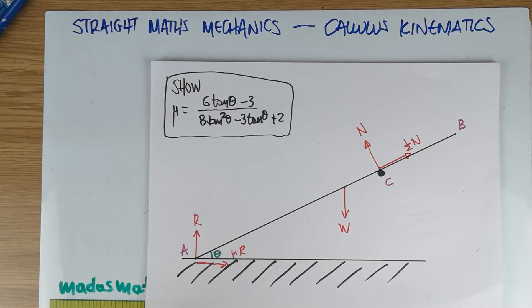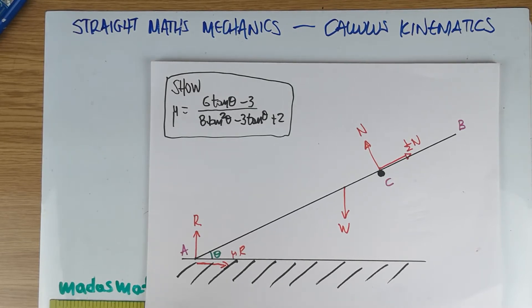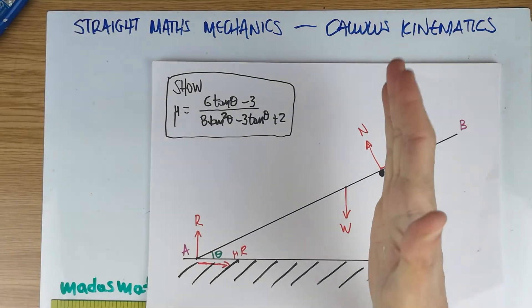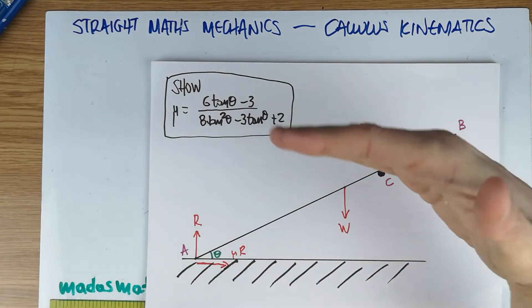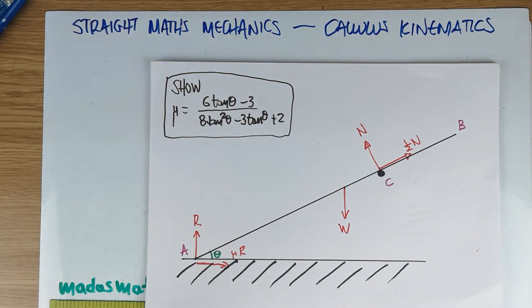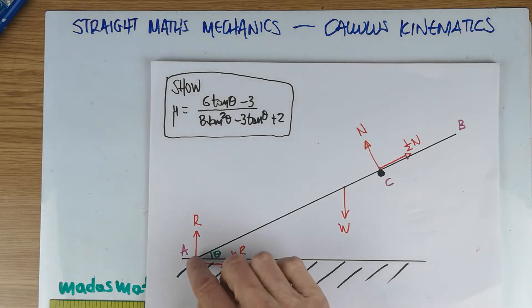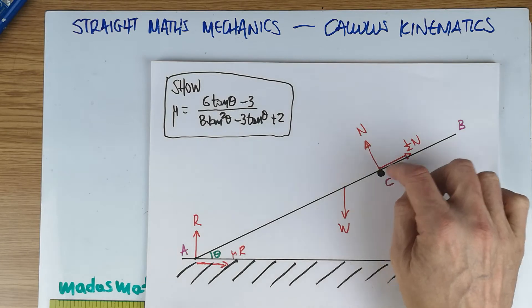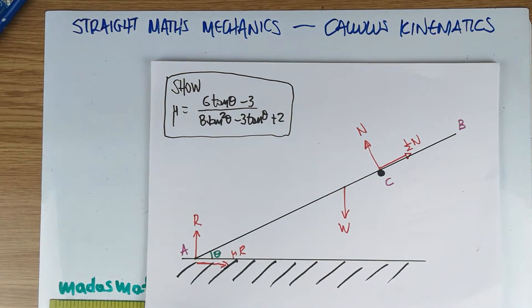This kind of question usually has three equations. Resolving vertically, resolving horizontally, and then taking moments about one particular place. The question is, where do we take moments? It hardly matters. Normally, where there's more than two forces. Usually at A or at C, that you will get rid of these two forces. I'm going to take moments about A, I think.